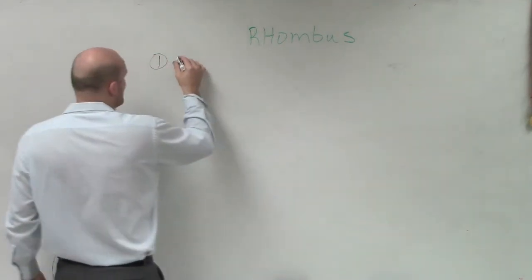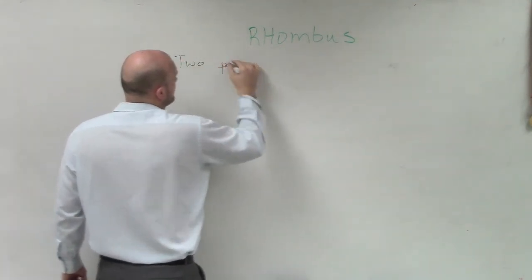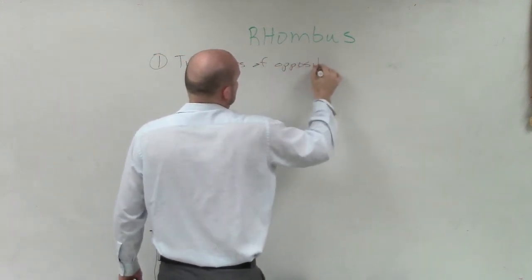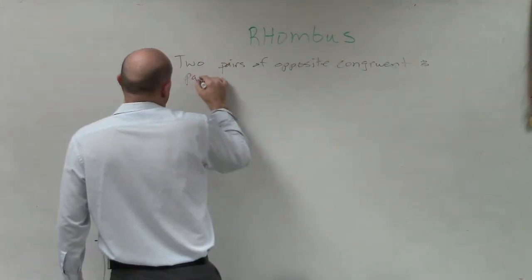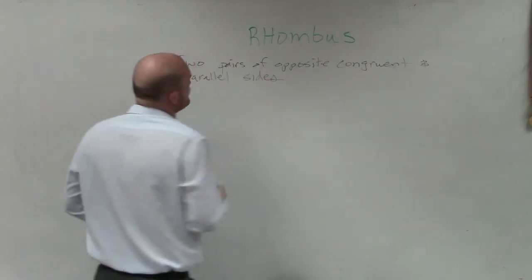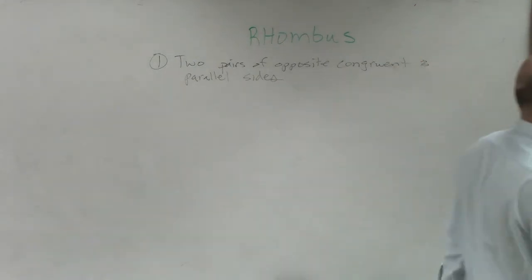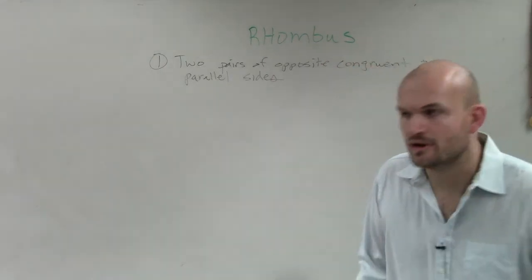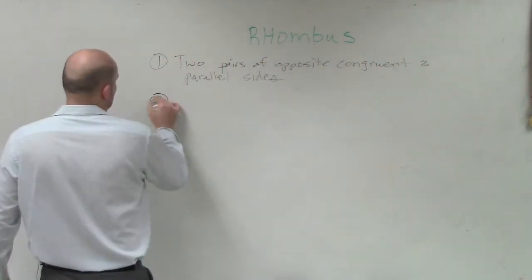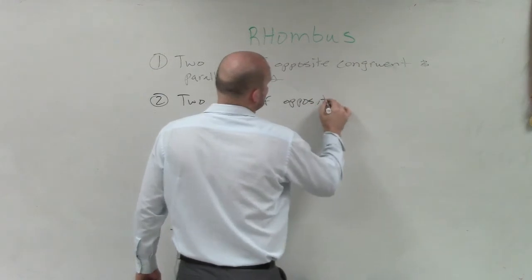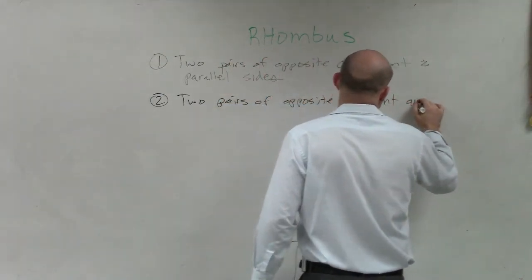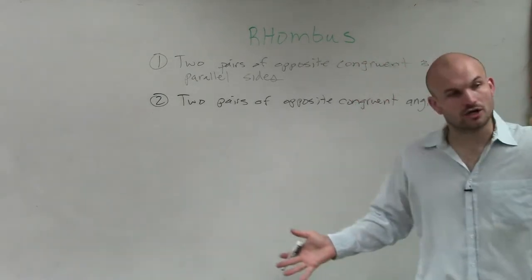And these absolute truths are a parallelogram has two pairs of opposite, congruent, and parallel sides. Two pairs of opposite, congruent, and parallel sides. We also know that it has two pairs of opposite, congruent angles. That means the angles that are across from each other are congruent.